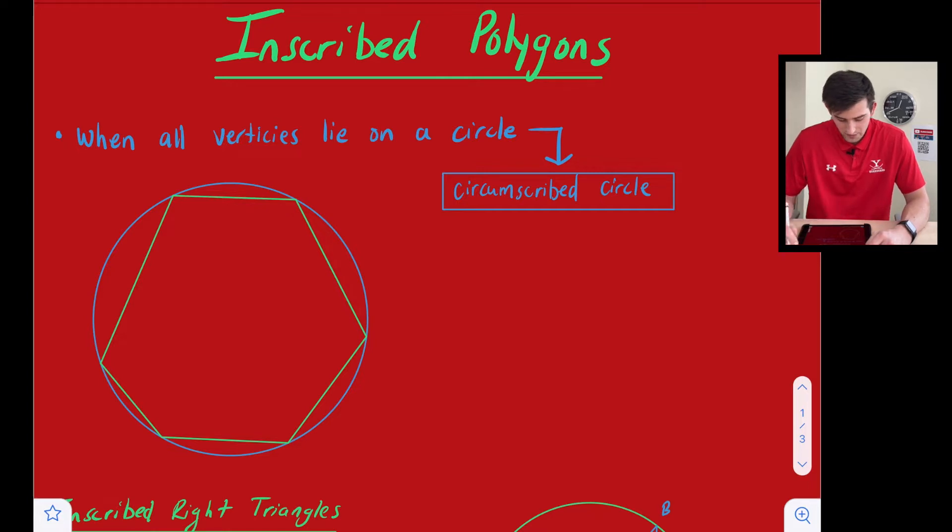So if we see in this diagram right here, in the green color, that shape, that polygon is what we would call inscribed because all of its vertices lie on this blue circle right here.